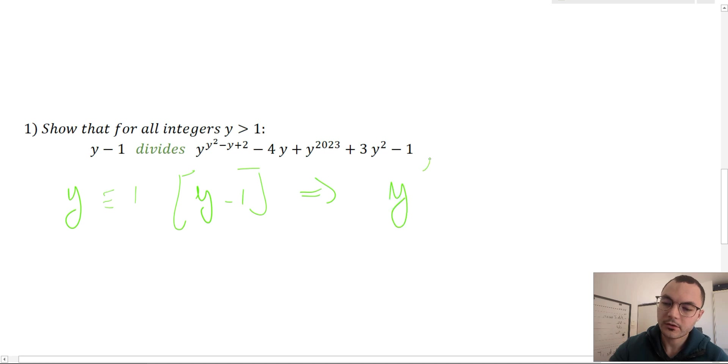y to the power of k is congruent to one mod y minus one for all integers k.